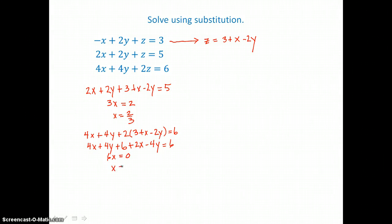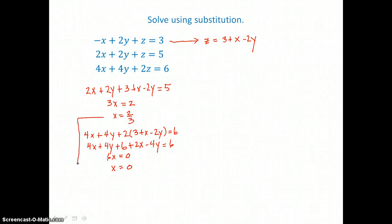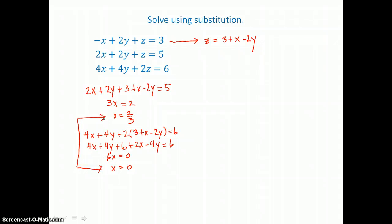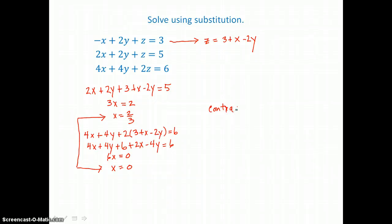This is a contradiction, because x can't equal both 2 thirds and 0. Because I end up with this contradiction, there is no solution to this system of 3 equations and 3 unknowns.